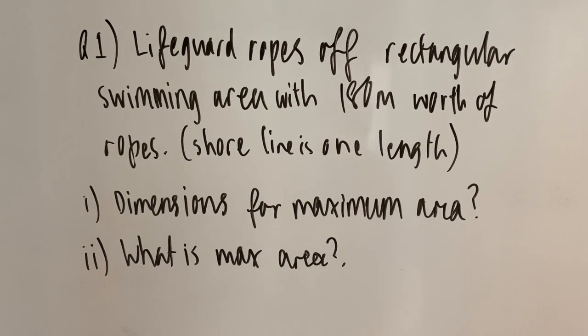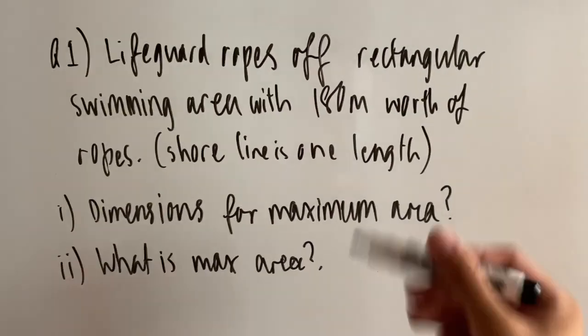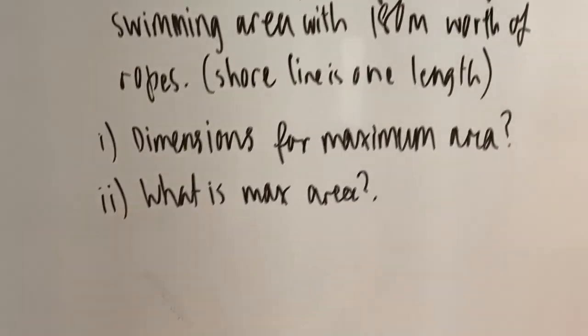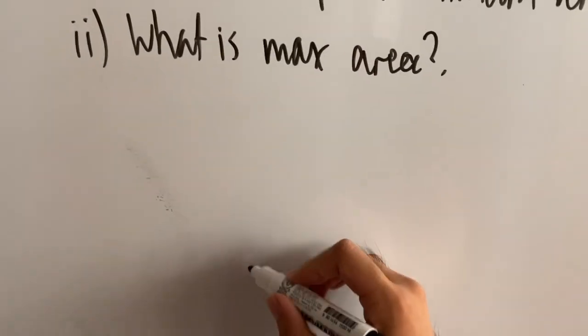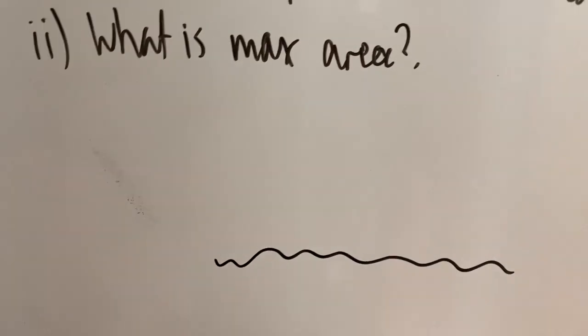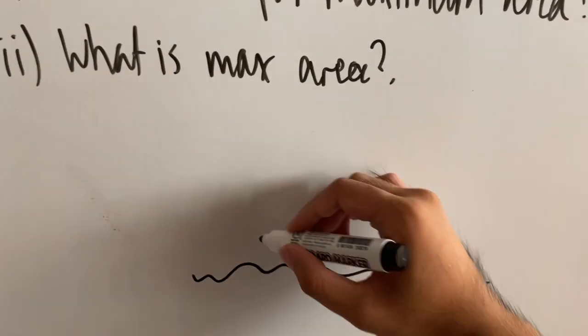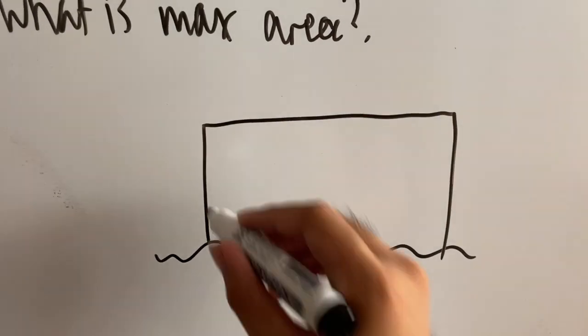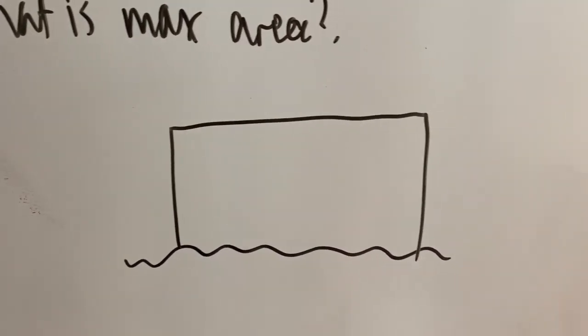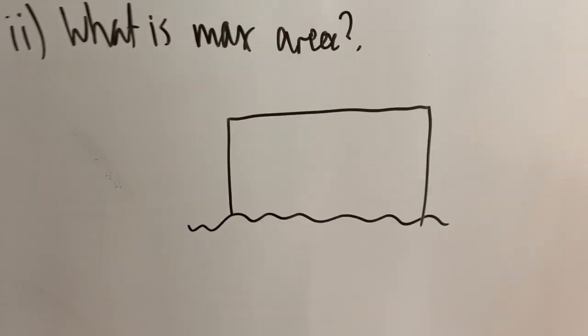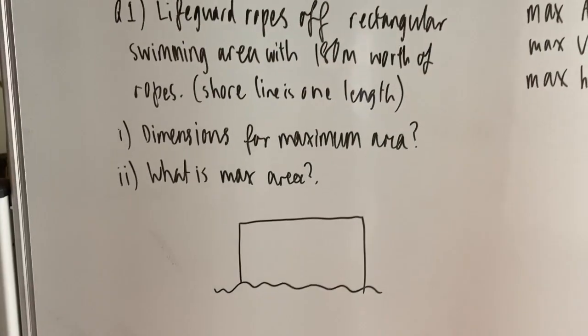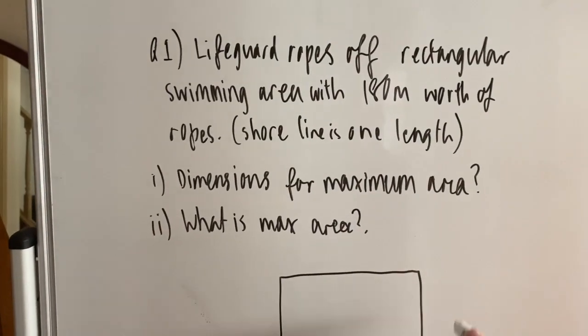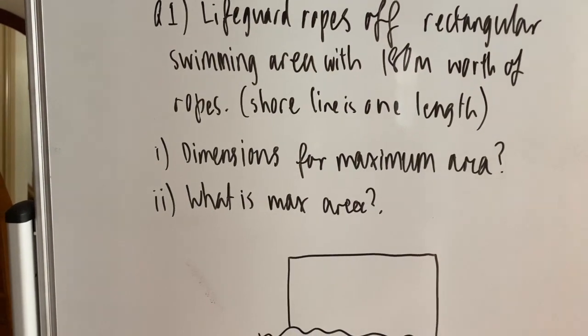So first off I want to start off by drawing a diagram. Remember this is a rectangular swimming area with the shoreline as one length of your rectangle. So imagine this is the shoreline of the beach and that's one side of my rectangle, and just filling in the other side here, all these straight sides here, they represent my 180 meters worth of rope. Now I want you guys to remember that we don't know a single side of this rectangle here.